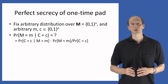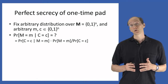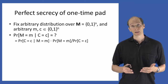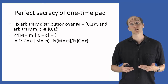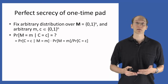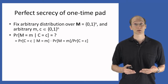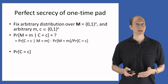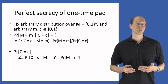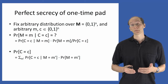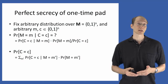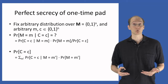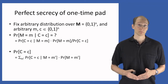The first thing we do is rewrite the expression using Bayes' law. The probability that the message equals m conditioned on the ciphertext being c equals the probability that the ciphertext is c conditioned on the message being m, times the probability that the message equals m, divided by the probability that the ciphertext equals c. To compute the probability that the ciphertext takes on value c, we use the law of total probability: it's the summation over all possible messages m' of the probability that the ciphertext equals c conditioned on the message being m', times the probability that the message equals m'.